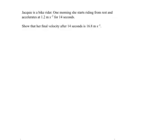The first thing to do is to look for the important information in the question. Jackie is a bike rider — not important. One morning — doesn't really matter what time of day it is. She starts riding. From rest — that is essential information. That means the initial velocity is zero.